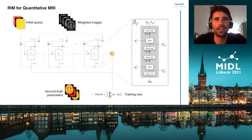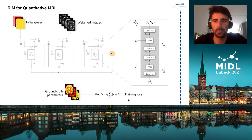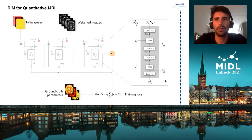Estimates are initialized at the beginning of the optimization and, at each iteration, they are updated until the final estimate is produced. The network is trained by comparing the estimates at each iteration to the ground truth parameter maps. In our work, G-Gamma is composed of a series of convolutional layers interleaved with gated recurrent units used to keep track of the optimization.